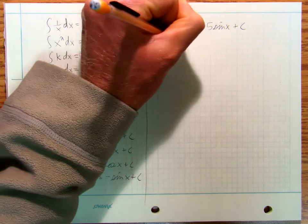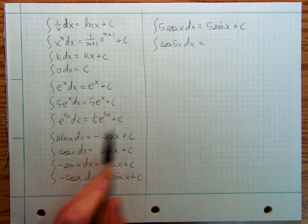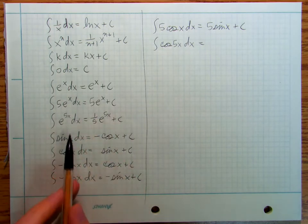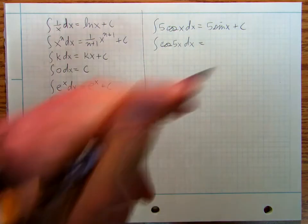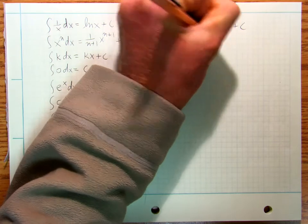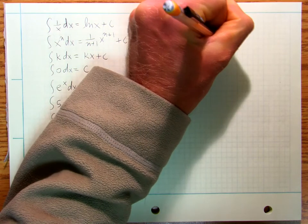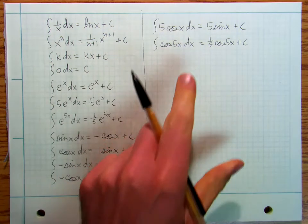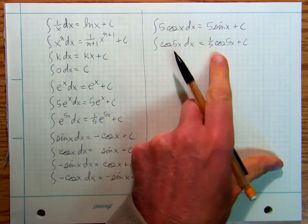And the integral of cosine 5x dx. I'm following this one, mirroring that one. This, again, is a chain rule reverse problem.